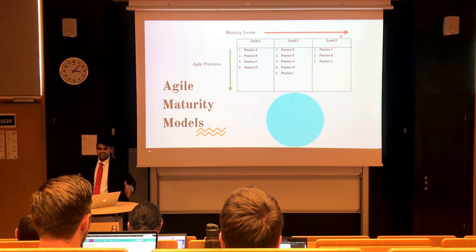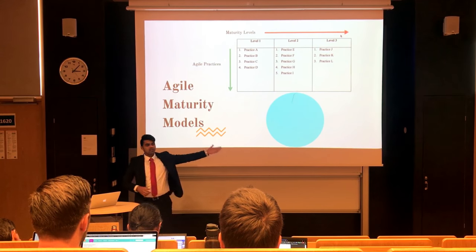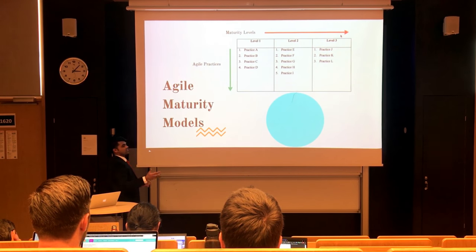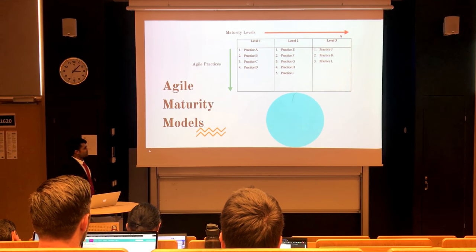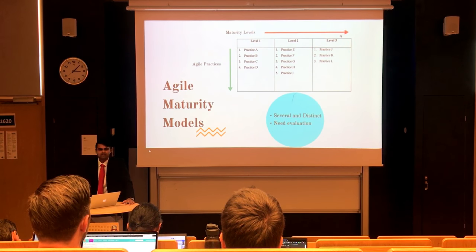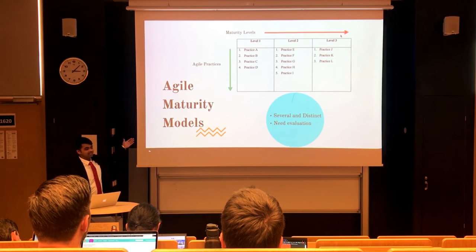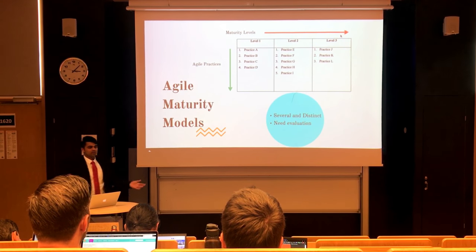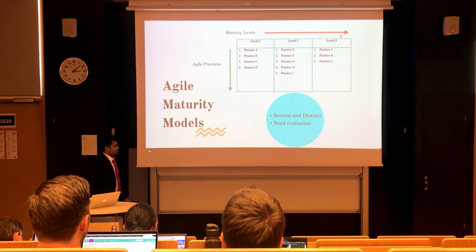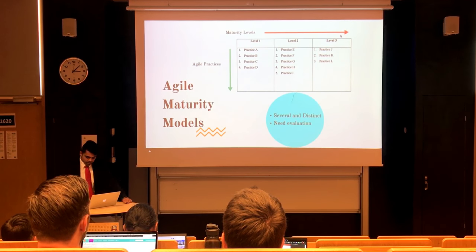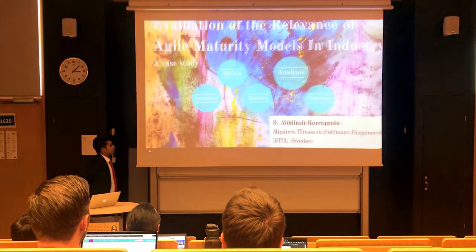So a new approach in the last decade emerged: Agile Maturity Models. These provide a set of practices and say in a number of increments — either 3, 5, or 7 — which practices to implement first in each increment. But that's also a problem, because these agile maturity models are multifarious. There are several in the literature and all are distinct from each other, meaning the order of practices they suggest differs. So we don't know which one is right. They haven't been evaluated as much as we would like, and we need them to be evaluated in industry.